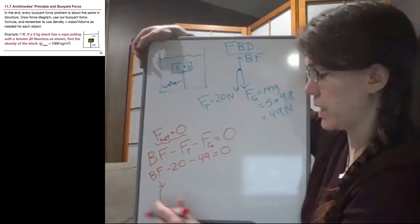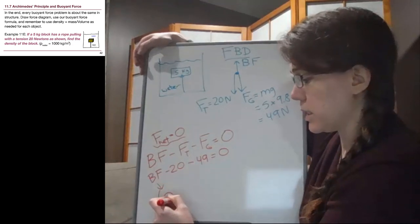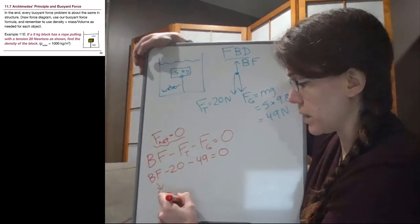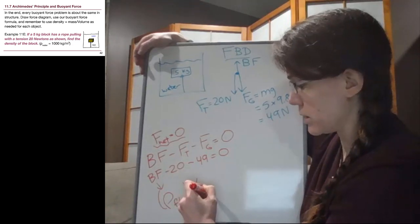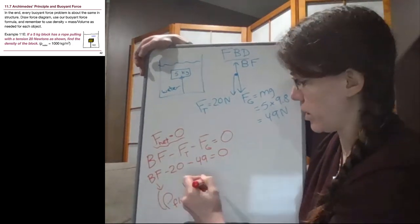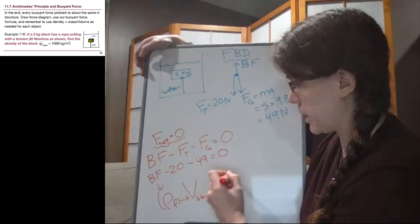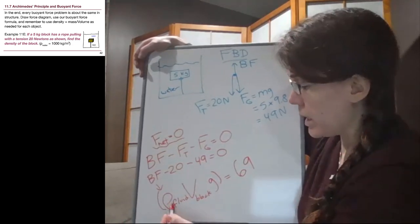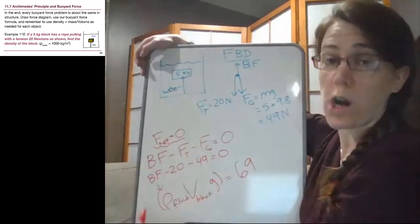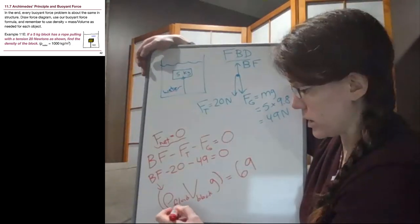And the buoyant force, we can say, is the density of the fluid, that's the water, times the volume of the block. It's the displaced fluid, but it's the same volume, times g, and that's equal to 69 Newtons. Now the density of the fluid is the water, that's 1,000.